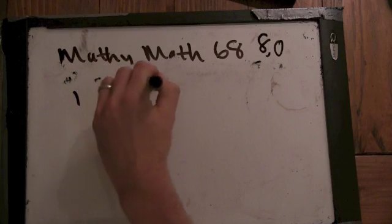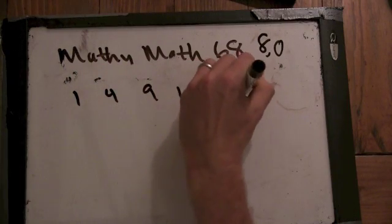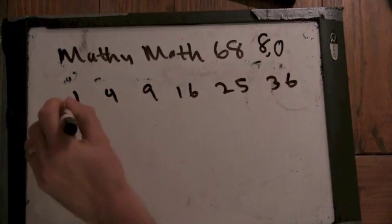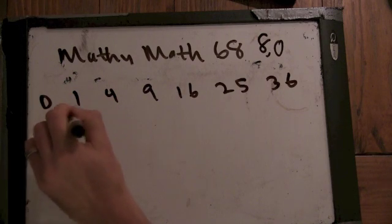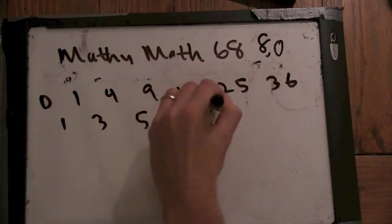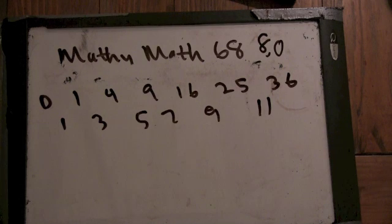See, squares spread out. 1, 4, 9, 16, 25, 36. So the difference is, I actually start with 0. 1, 3, 5, 7, 9.